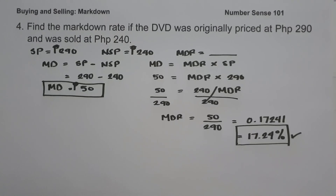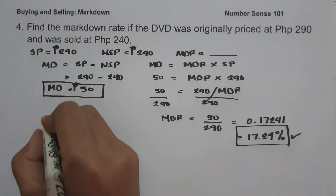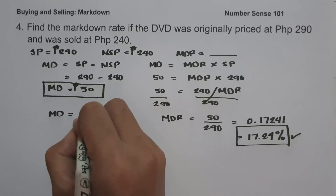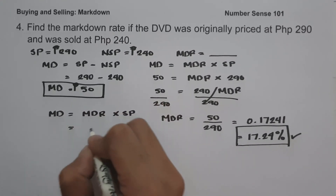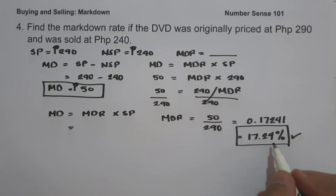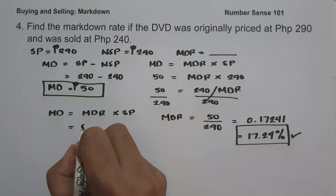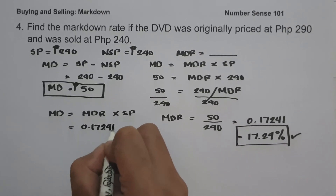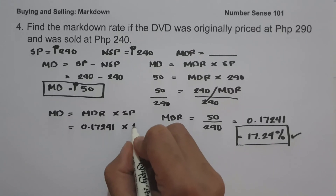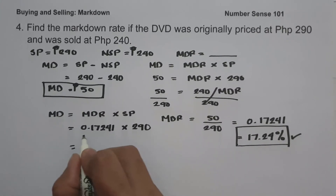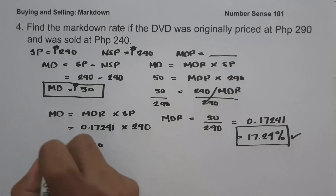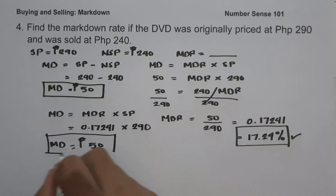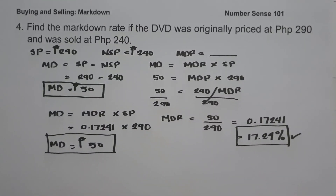To check if our answer is correct, let us use the formula: markdown equals markdown rate multiplied by selling price. The markdown rate of 17.24%, written as a decimal, is 0.17241, multiplied by the selling price of 290. If we multiply this, we get 50 pesos, so we come up with the same markdown. I hope you have learned from this video. Thank you so much for watching, and God bless us all.